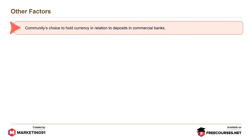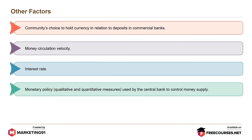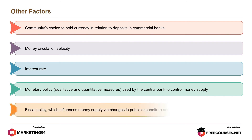Other factors determining money supply include: the community's choice to hold currency in relation to deposits in commercial banks; money circulation velocity; interest rate; monetary policy, which refers to qualitative and quantitative measures used by the central bank to control money supply; and fiscal policy, which influences money supply via changes in public expenditure and taxation.